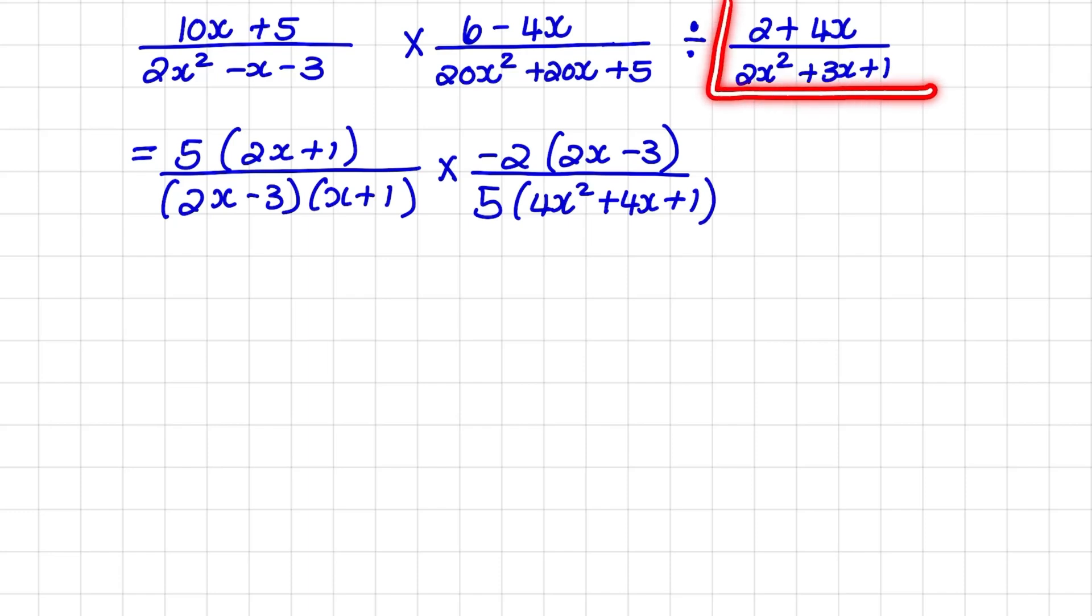Now I'll move on to my third fraction. Notice that we are dividing the other two fractions with the third fraction. So we will apply a method called tips and times. What it means is that we will change the division to multiplication and that we will tip the fraction, meaning we will write it as its reciprocal or the numerator as the denominator and the denominator as the numerator. So when I do that, I have multiplied by 2x squared plus 3x plus 1 over 2 plus 4x.